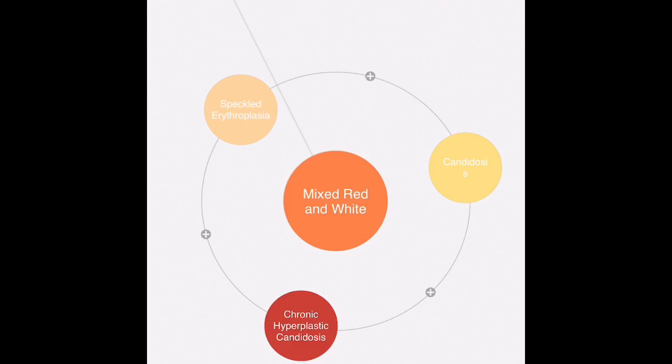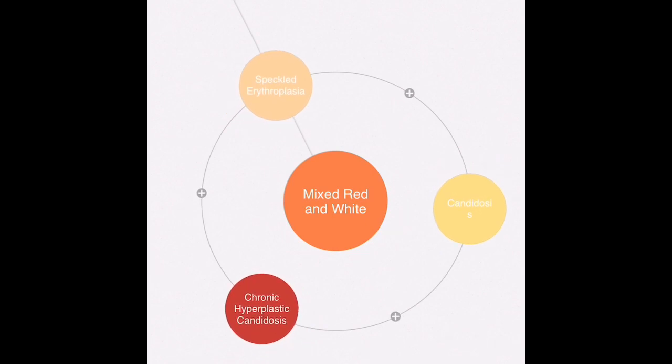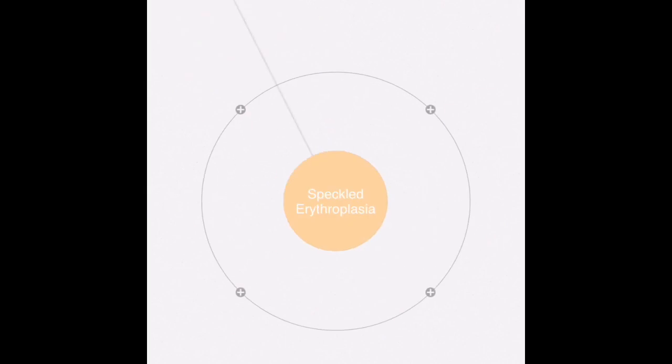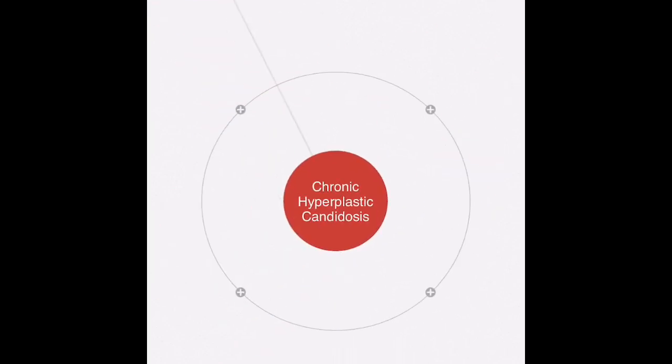In the category of mixed red and white, one is candidiasis because it can appear as a red lesion, white lesion, or as a mixed lesion that appears both red and white. Another category is speckled erythroplasia, and there is chronic hyperplastic candidiasis.